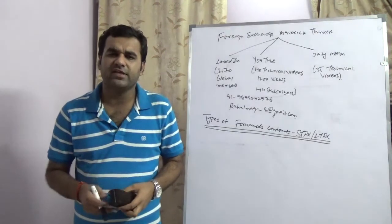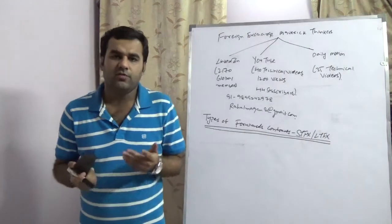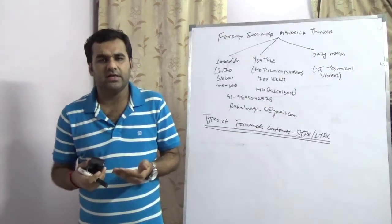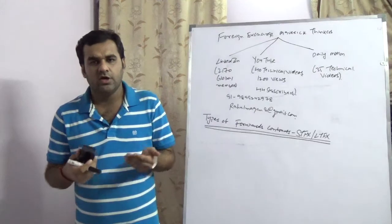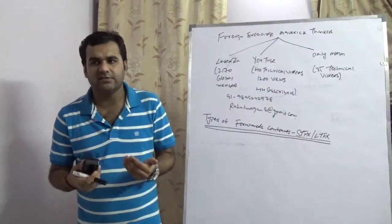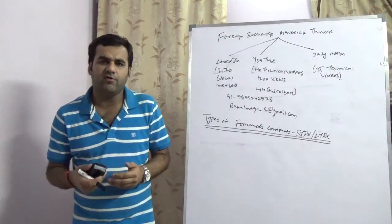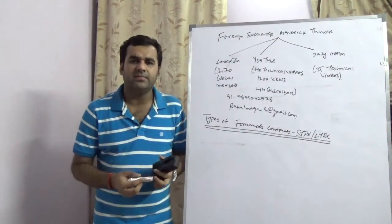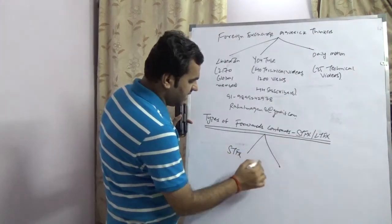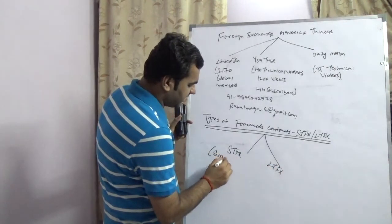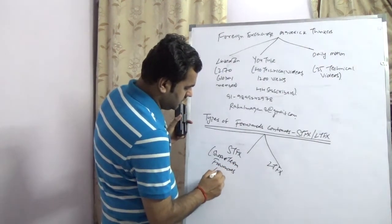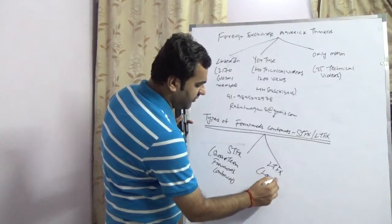Again stressing on the fact that we are going to speak about the topic known as types of forward contracts. Forward contracts means an agreement done by one party, known as a corporate, with a second party, known as a bank, to sell or to buy a respective currency for a period of time at an agreed price known as the forward price. Forward contracts based on the categorization of tenor can be divided into two parts: one is known as STFX forward contracts and another is known as LTFX forward contracts.